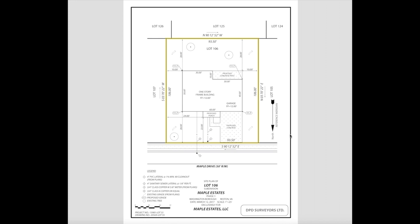Looking at the drawing, we start by locating the north arrow — we can see it's pointing north. One of the most important components of the survey is the boundary, or property line, which in this example is highlighted in yellow to make it easy to read. This yellow line all the way around clearly identifies what's inside your property versus what's outside. This specific lot has a depth of 106 feet and a width of 93 and a half feet. These numbers also show the adjacent lot numbers.